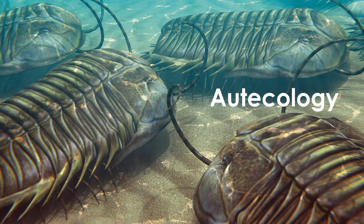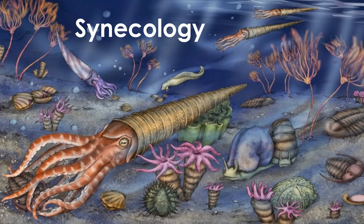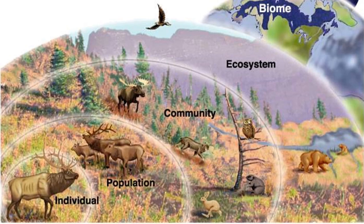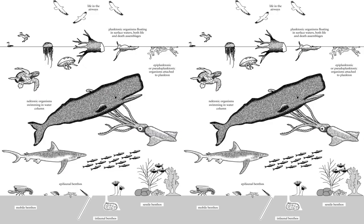Autocology is dedicated to the study of individual organisms and species. Synecology is the study of interactions between species living together — we also call synecology community ecology. A community consists of two or more populations of different species, so synecology deals with the interactions among organisms living in the same community.